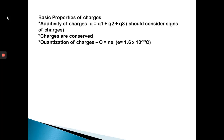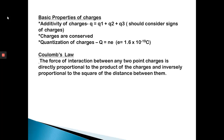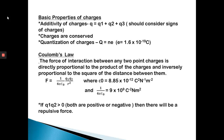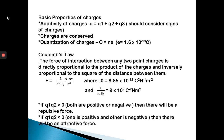Coulomb's law: the force of interaction between any two point charges is directly proportional to the product of their charges and inversely proportional to the square of the distance between them. The equation is F equals 1 by 4 pi epsilon-0 times q1 q2 by r-squared. The value of epsilon-0 is 8.85 into 10 to the power minus 12 coulombs squared per newton per meter squared, and 1 by 4 pi epsilon-0 equals 9 into 10 to the power 9. If q1 q2 is greater than 0, the force is repulsive; if q1 q2 is less than 0, the force is attractive.